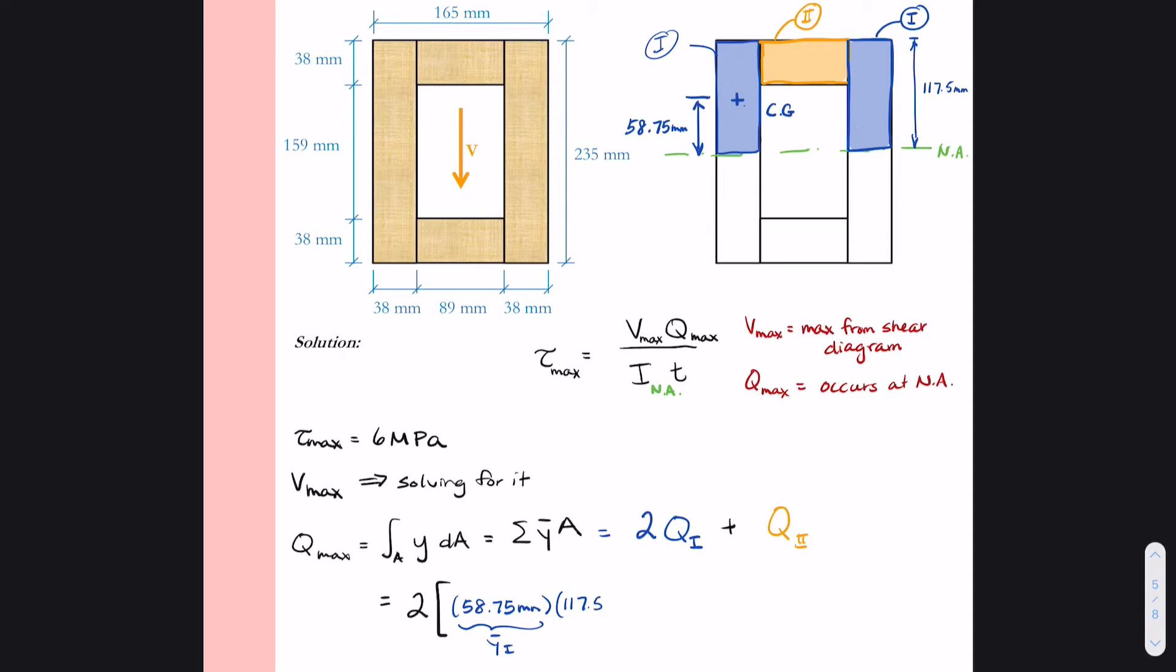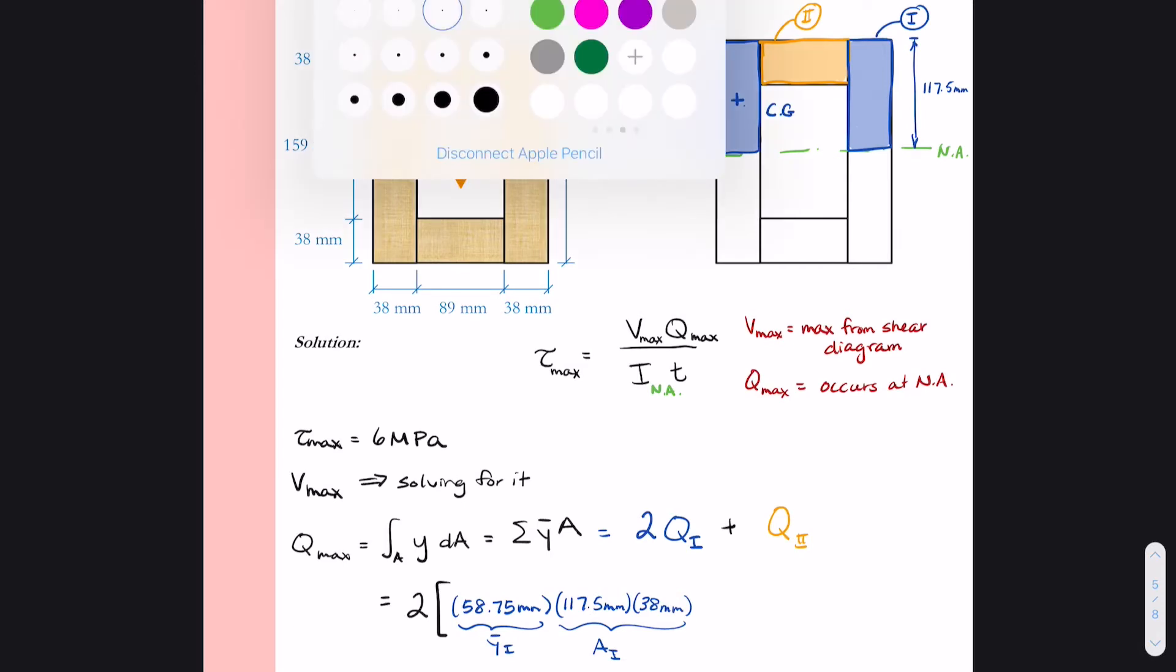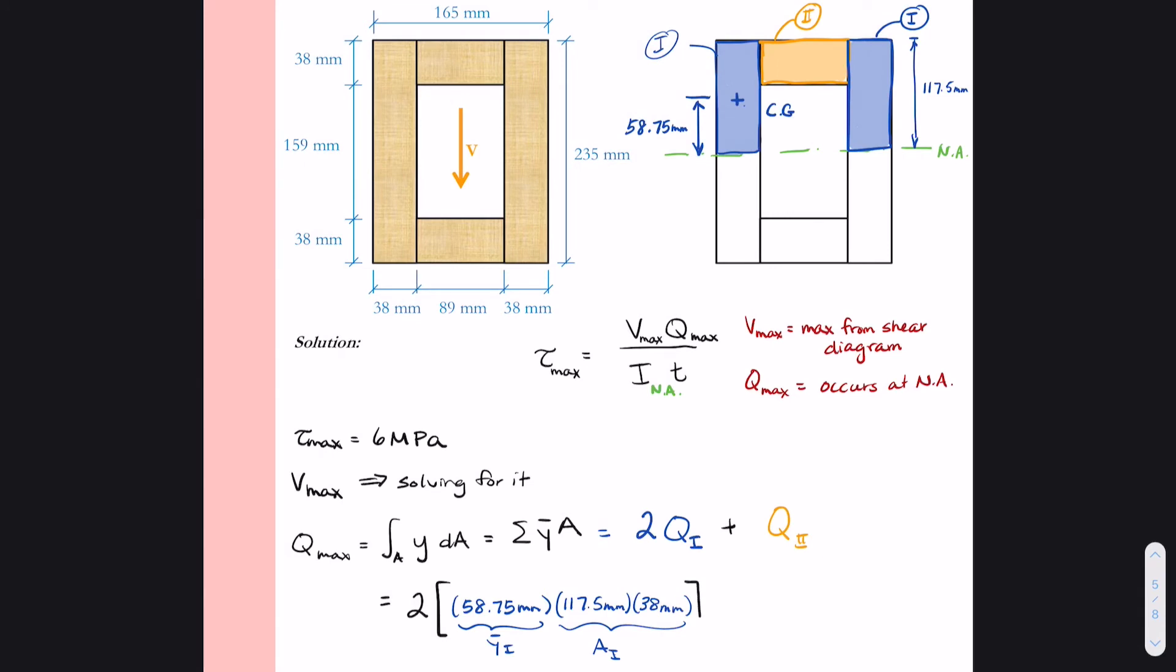We also know that the width is given to us as 38 millimeters. So this becomes the area for shape 1. I put that into brackets and I multiply it by 2 because we have two blue rectangles. So the rectangle on the right will have the same quantity as the rectangle on the left.